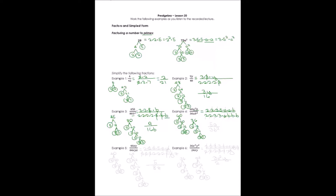Let's cross out matching terms. Two sets of 2's cancel, one set of 3's cancels, the 5 doesn't match anything. For the variables, one set of a's cancels and one set of b's cancels. What's left in the numerator is 5a. In the denominator, 3 and b times b, which is b squared. The lowest form is 5a over 3b squared.